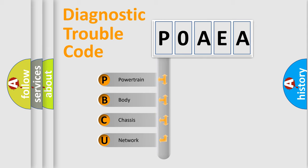We divide the electric system of the automobile into four basic units: Powertrain, Body, Chassis, and Network.